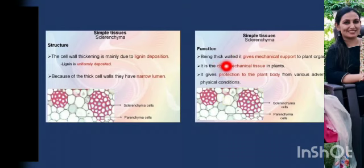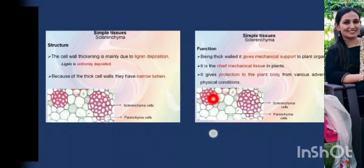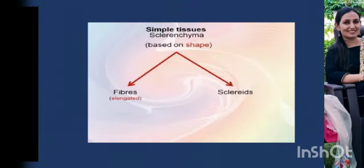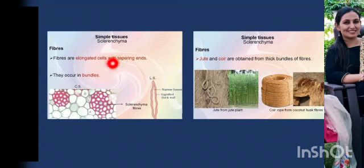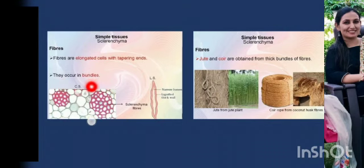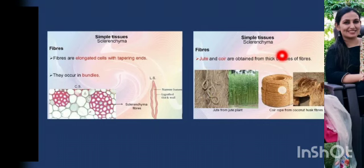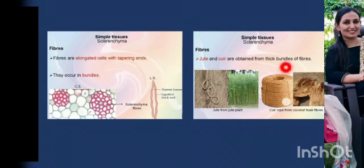Being thick-walled, sclerenchyma gives mechanical support to plant organs. It is the chief mechanical tissue in plants and gives protection to the plant body from various adverse physical conditions. Based on shape, sclerenchyma tissues are of two types: fibers, which are elongated, and sclerids. Fibrous sclerenchyma tissues have elongated cells with tapering ends and occur in bundles. This type of fibrous sclerenchyma is generally present in jute and coir, which are obtained from thick bundles of fibers.